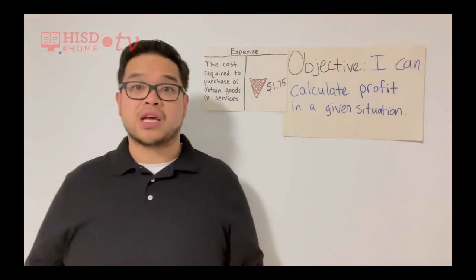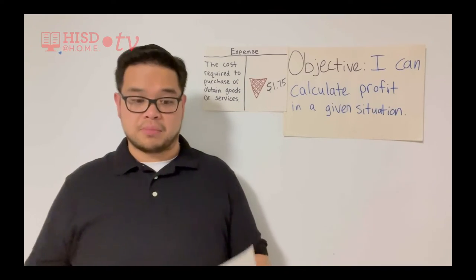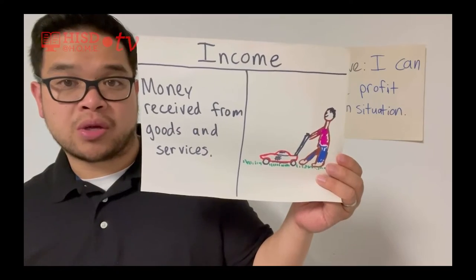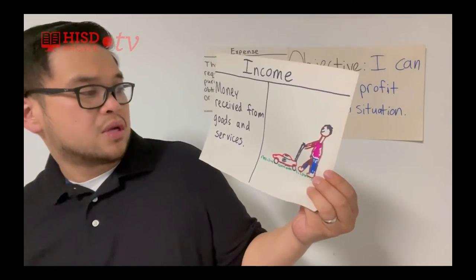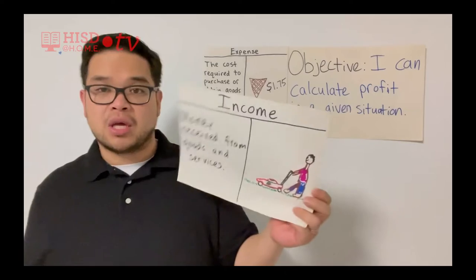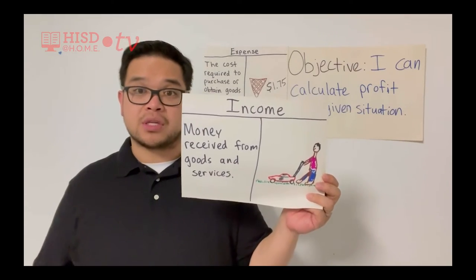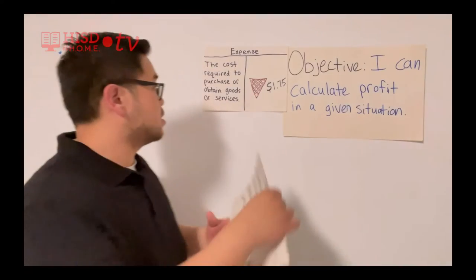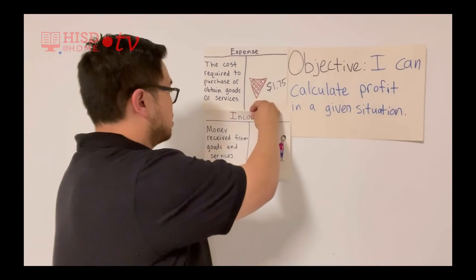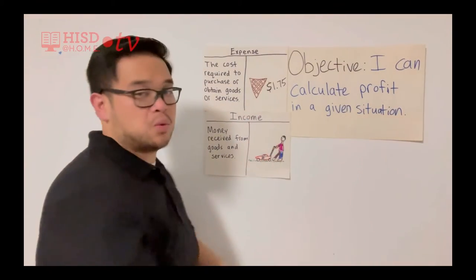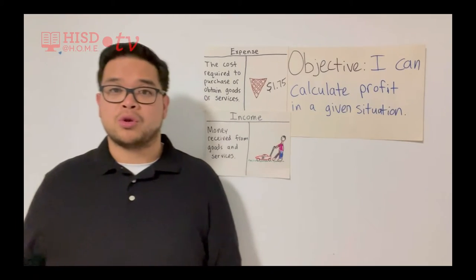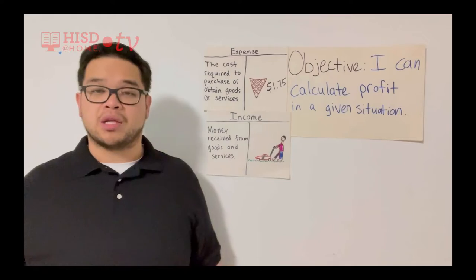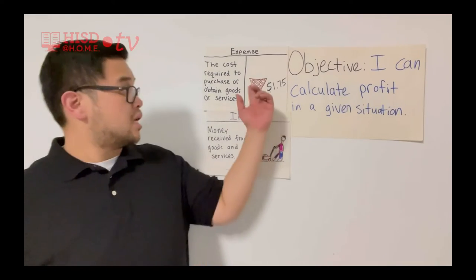Then you have something called income. Income is money received from doing goods and services. So this person is mowing the lawn — it's a service — so they're going to get an income for doing this service. Basically, when you have a job or a career, you're doing a good or service, you get an income, which is money that you can use to spend on different expenses.